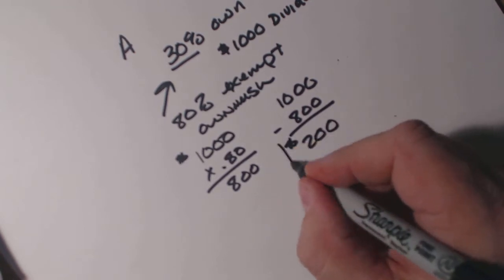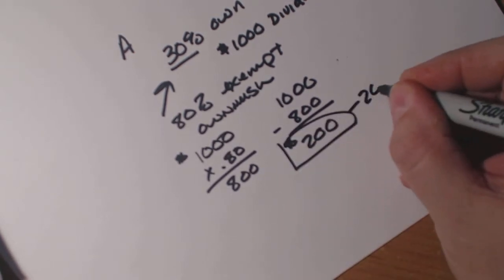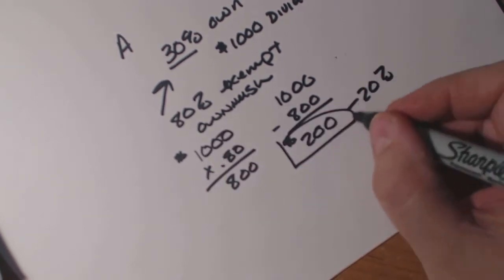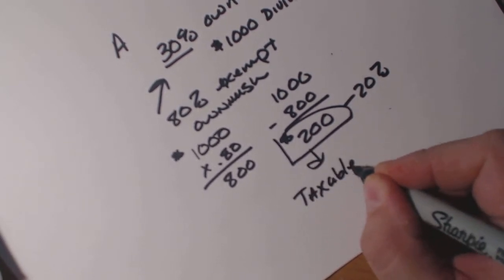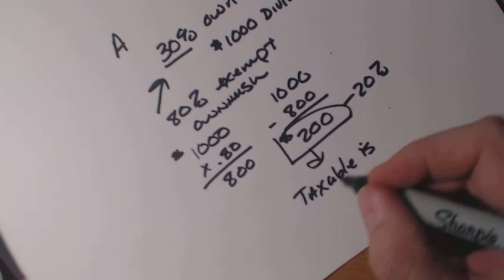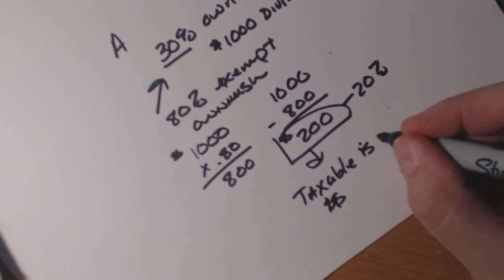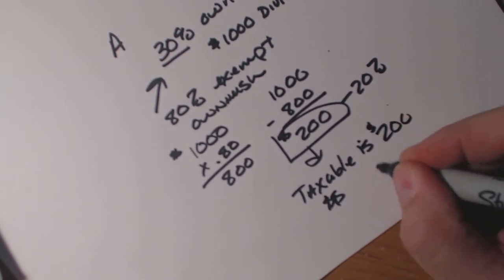And the taxable, because this is 20%, because 80% exempt, taxable amount of money is $200, or 20%.